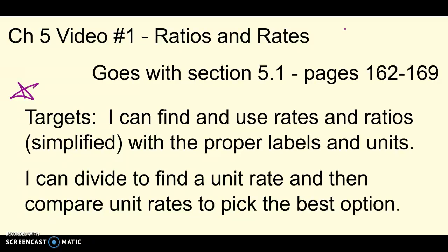Make sure you actually copy these down on your paper. There are two targets. We're going to find rates and ratios, make sure that we can simplify them and add the proper labels or units that go on them. And also be able to divide those rates and find what we call a unit rate. Once we have unit rates, then we can compare those to pick the best option - to pick the better price, to pick who's faster, to pick whatever the better option is between two different unit rates.